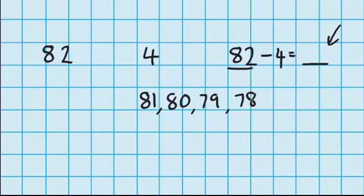And just like we did before, let's just check we've counted back four numbers. And you can see that we have here. So the answer to 82 minus 4 is 78.